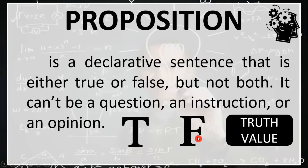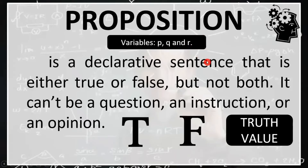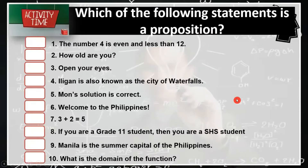In fact, true and false are the numerical constants in logic. In logic, variables are used to present propositions in the same way that we use variables to represent numbers in algebra. The most common variables used are P, Q, and R.